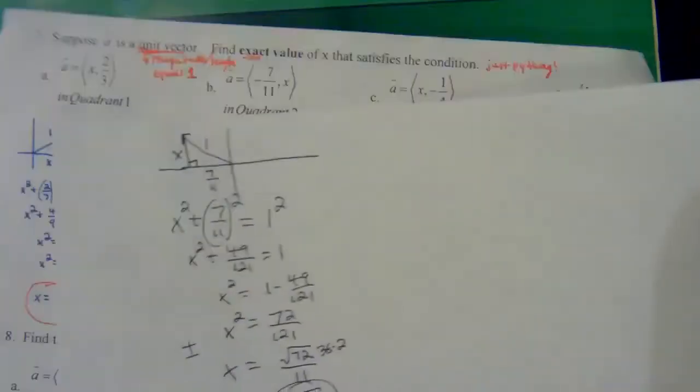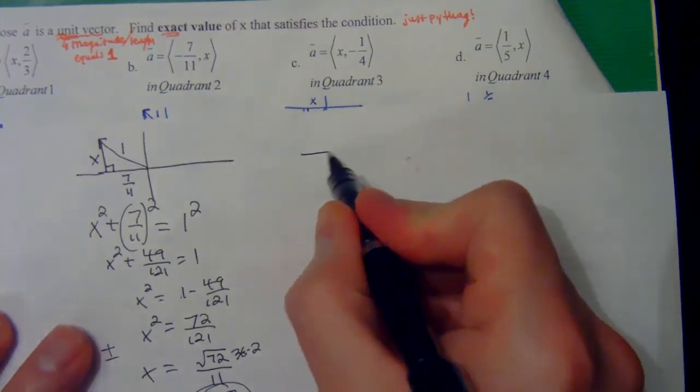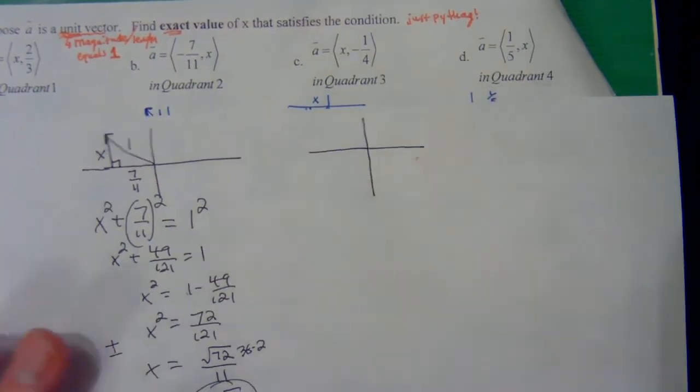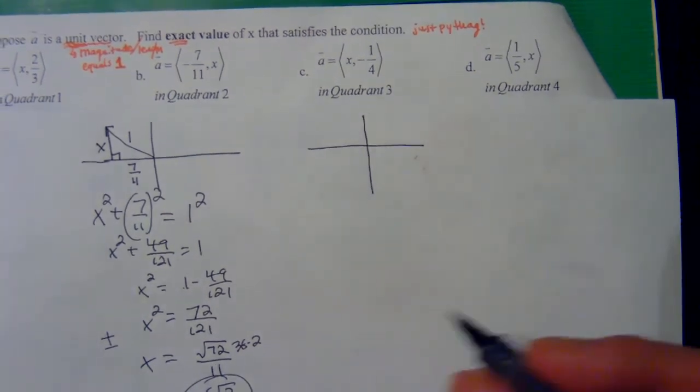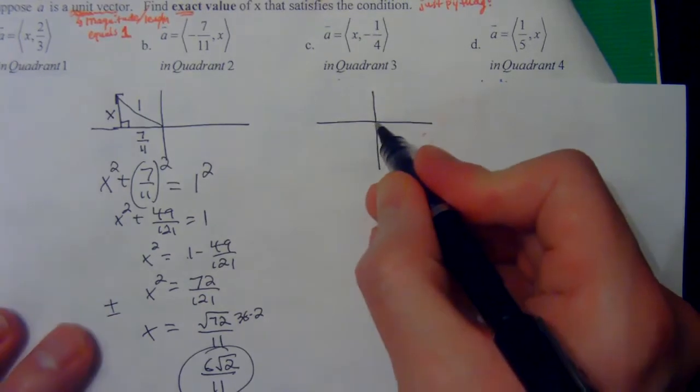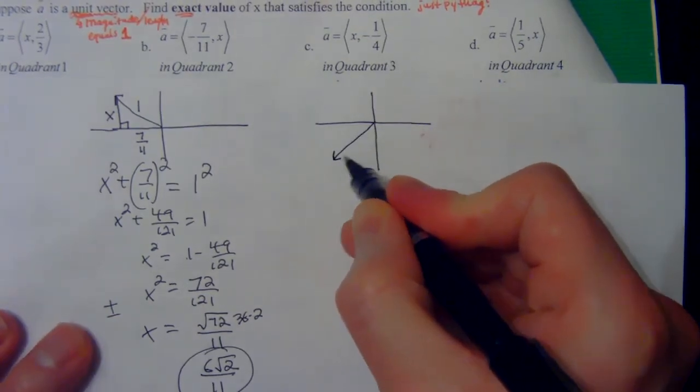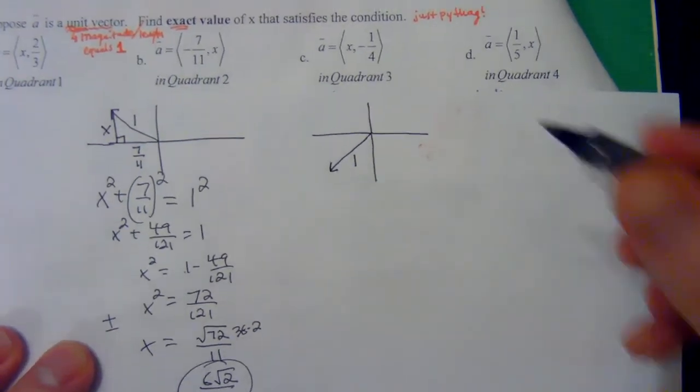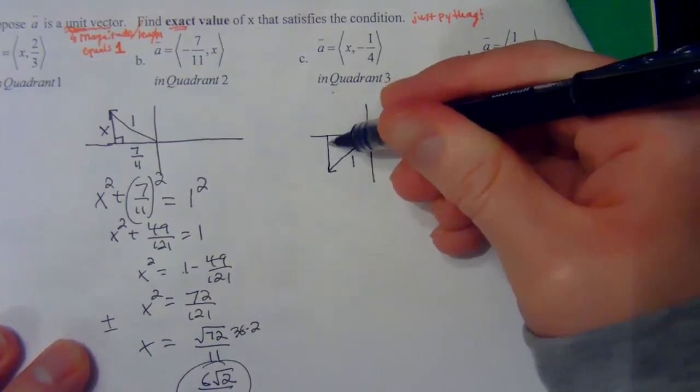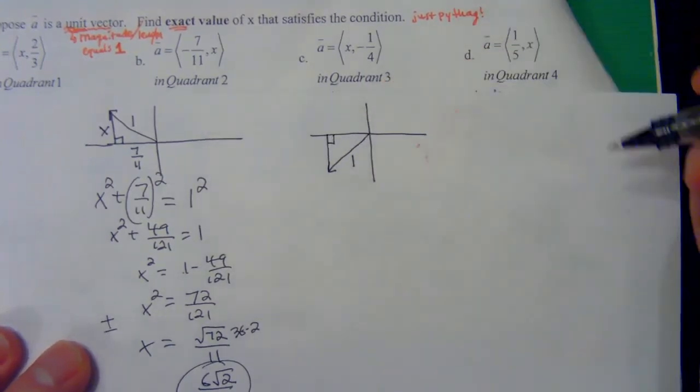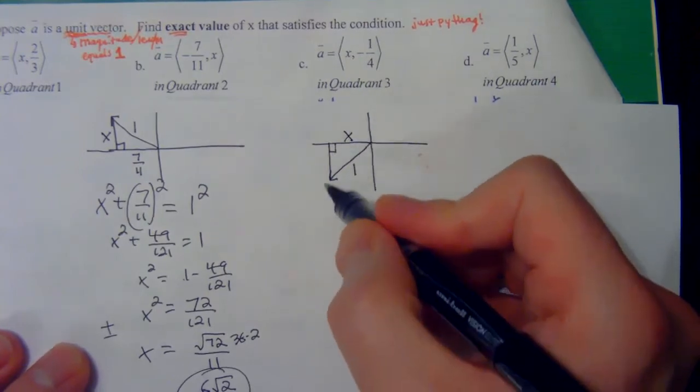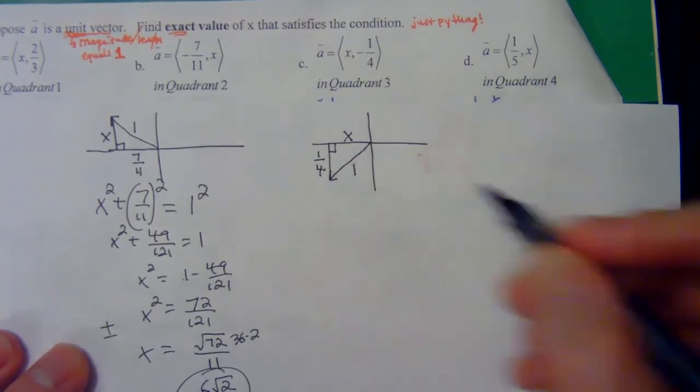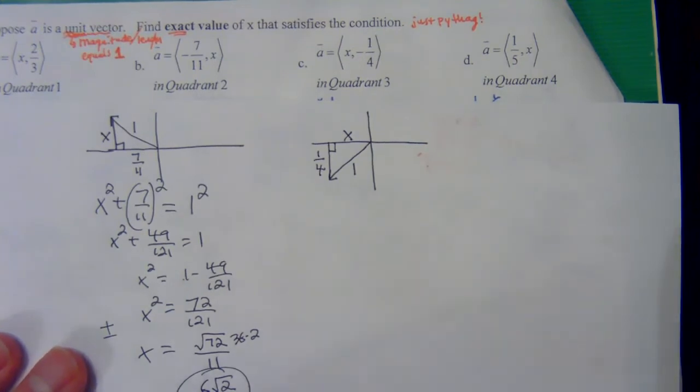Let's do letter C. This time we are in quadrant three. You don't want to make a mistake and draw this in the wrong quadrant—be really careful with that because that's going to determine your plus or minus at the end. Quadrant three is over here, there's my unit vector of length one. I'm going to draw a triangle always perpendicular to that x-axis. This time I don't know the x value, so there's my variable there, and my y is negative one-fourth.